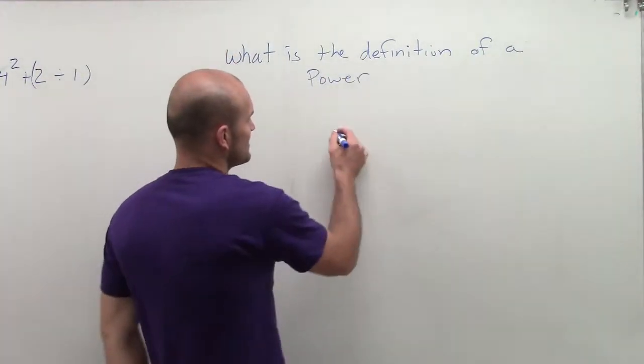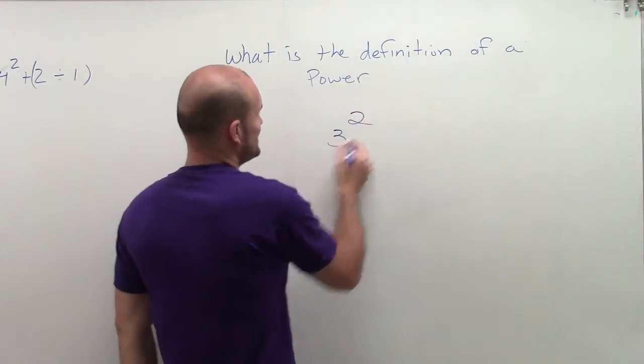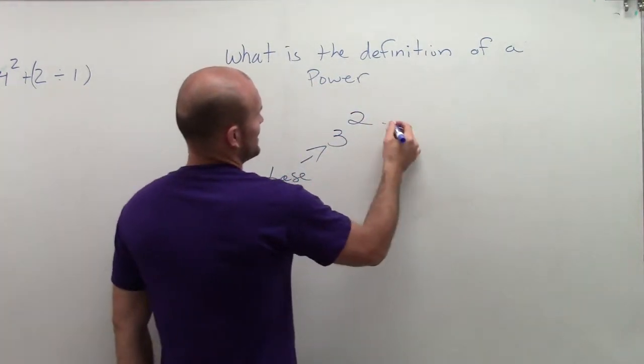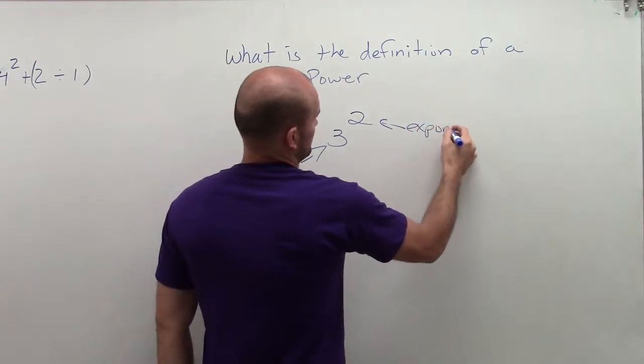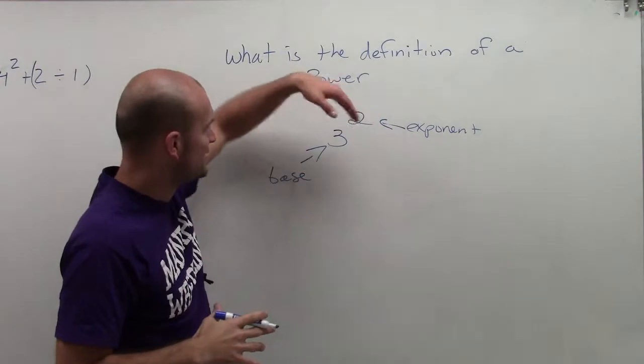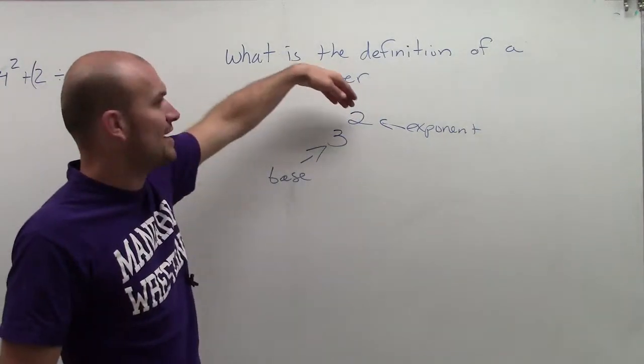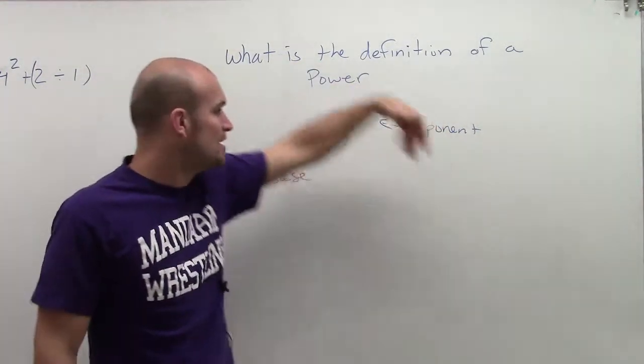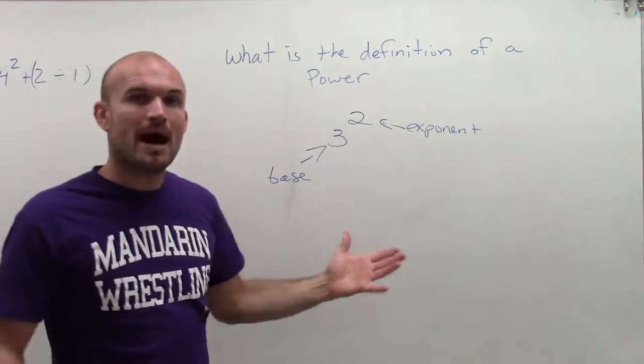All a power is, is it contains a base and an exponent. So your base is your number, and your exponent tells you how many times to use your base as a factor of your power.